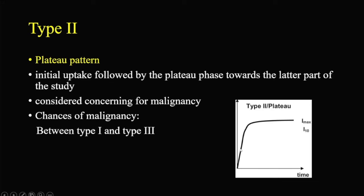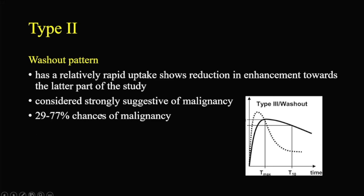With Type 2, the uptake compared to a normal area of the breast will be slightly early, but later on it plateaus. This is more concerning for malignancy than Type 1 but less than Type 3, so most of the time these are benign lesions.